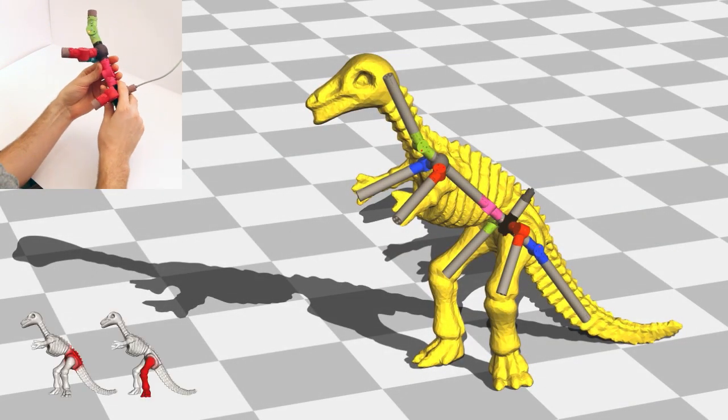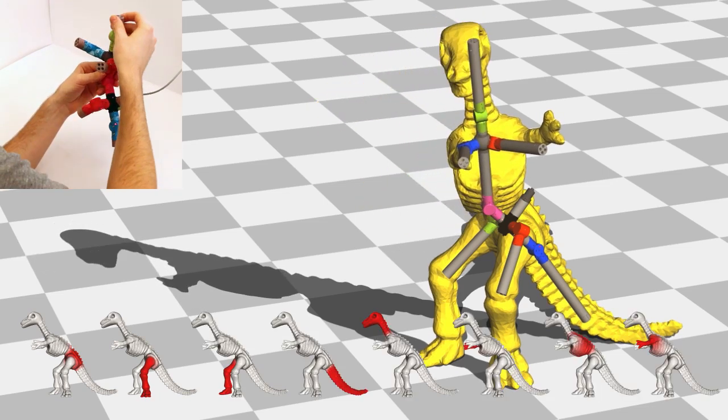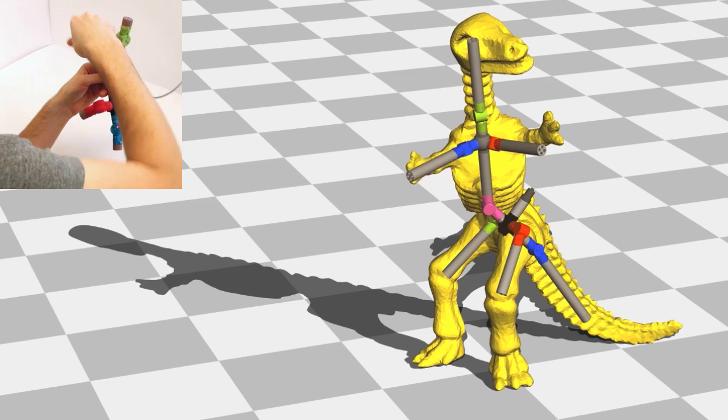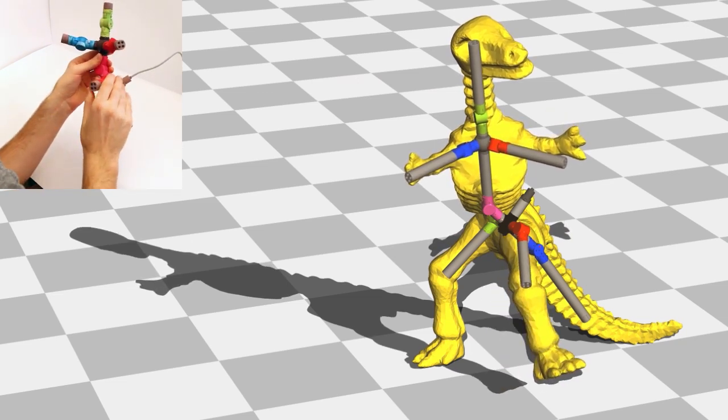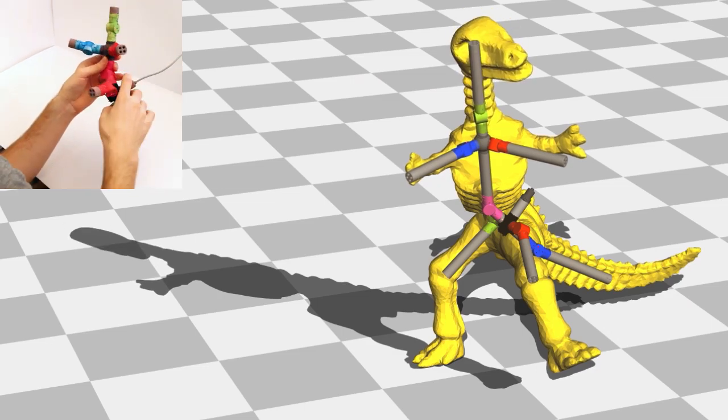Automatic skinning weights are computed to bind the device's virtual skeleton to the 3D shape. The user may immediately begin deforming the object by manipulating the device in hand. The character deforms on screen in real time.